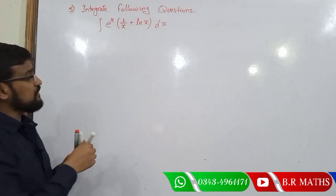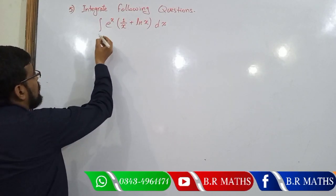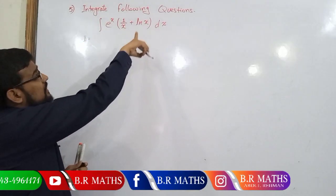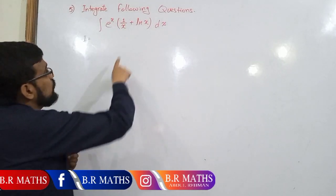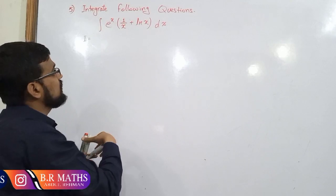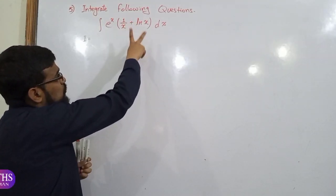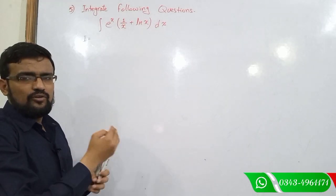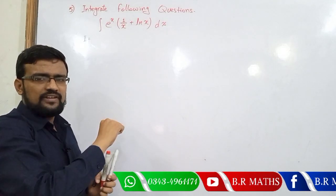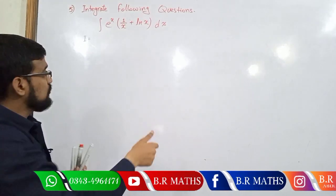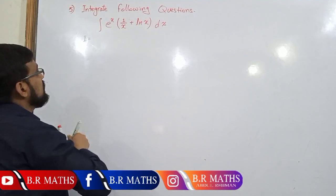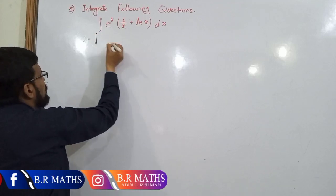According to this question, see 1 over x and natural log of x. These are two different functions, but they are the derivative and integral of each other. The derivative of natural log is 1 over x, and the integral of 1 over x is natural log. So in this question, both functions are given — how do we find these type of questions?